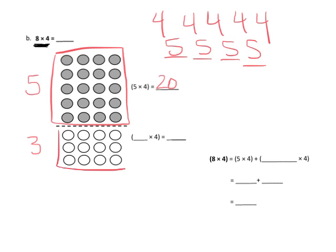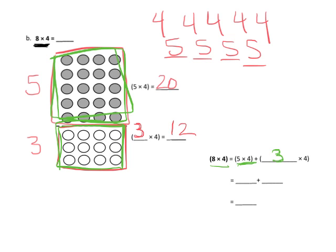Our second array, the bottom array, is 3 rows of 4, so we're going to fill in the 3 right here. Three rows of 4, and that's 12. Way over here we've got 8 times 4 is 5 times 4, that's this area, plus 3 times 4, that's this array right here. So that means 20 plus 12. We can see that here, 20 plus 12, and that equals 32 because we can add our tens first: 20 plus 10 is 30, plus the extra 2 is 32.